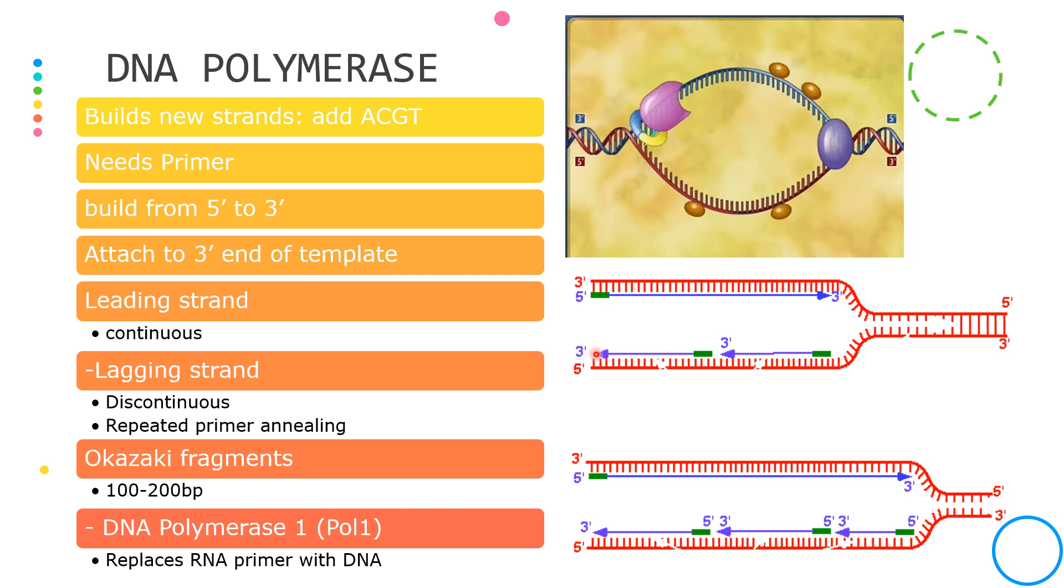That means another primer should be placed at the 3 prime end so that the DNA polymerase can build from the 5 prime to the 3 prime direction, and the process is repeated.